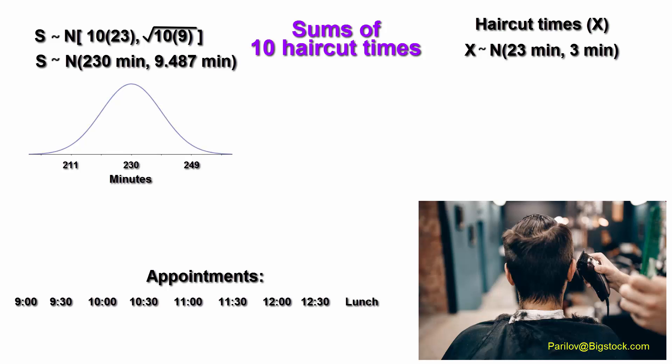What's the probability that the sum exceeds 4 hours, which is 240 minutes? Showing the work like we do for probability involving a normal distribution, and then using a calculator or table, reveals a probability of 0.146. Roughly 15% would exceed 4 hours.